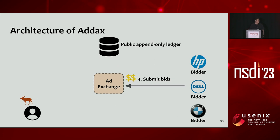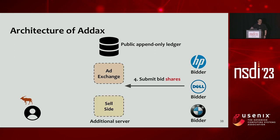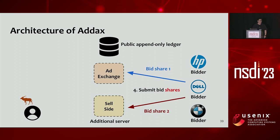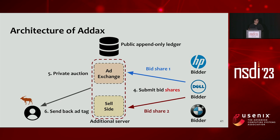In the traditional ad exchange, bidders directly submit bids to the ad exchange. In ADX, however, bids should not be learned by the ad exchange. To achieve this, we involve an additional server, which can be instantiated by the seller parties. Bidders create a bid share of their bid value — each server receives one bid share, and receiving only one share reveals nothing about the original bid value. The ad exchange then runs a private auction using these shares to find the winner and sends the ad tag to the user's browser.